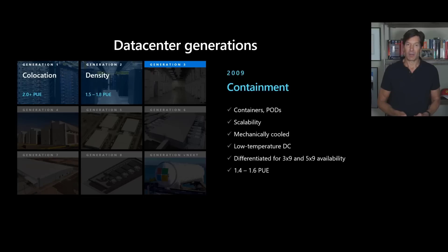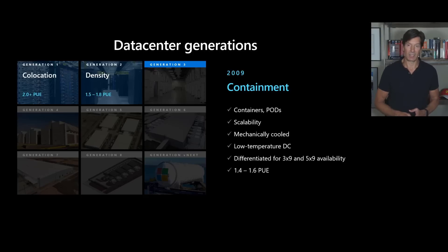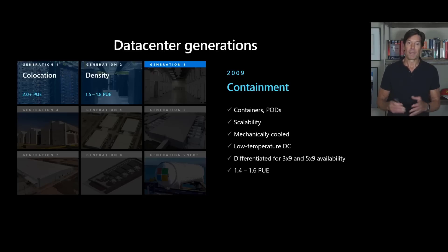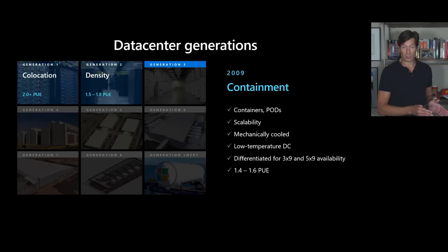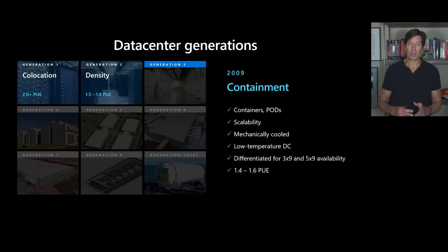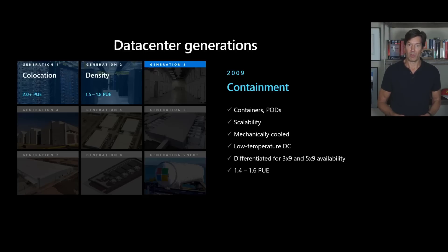With generation three, our container phase, we focused on deploying containers of servers. This allowed us to move more quickly and also to segregate three-nines capacity from five-nines. Five-nines capacity — gold-plated, with dual redundant power cords to every server — has higher PUEs than three-nines containers, where we could run workloads more resilient to total failures. In fact, Office services today are designed to work in three-nines configurations such that even a whole region can go down and Office 365 customers will see no impact. This got us down to PUEs of 1.4 to 1.6.